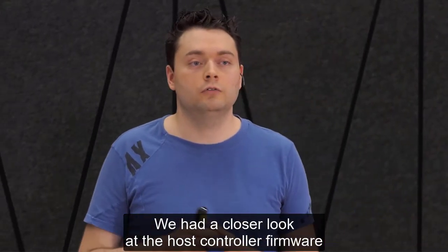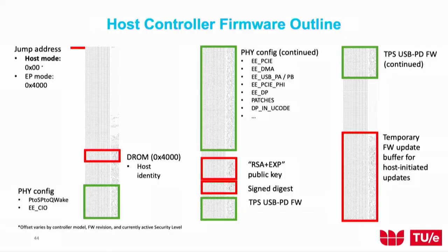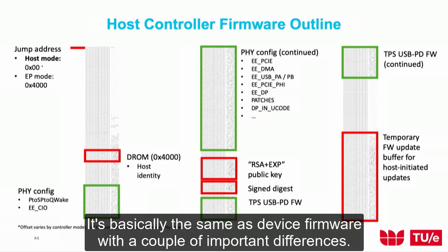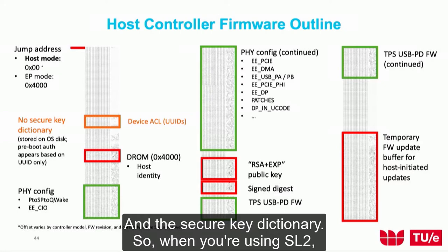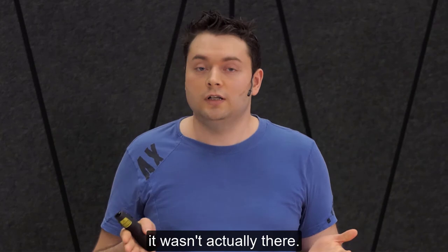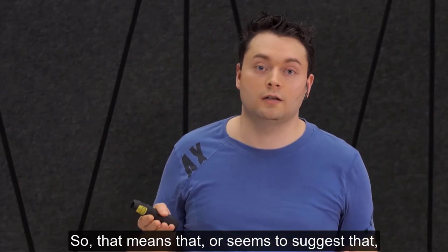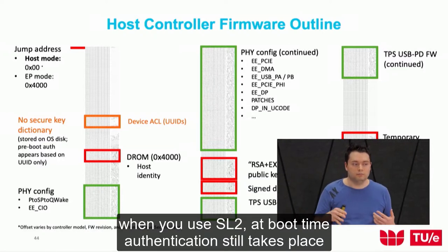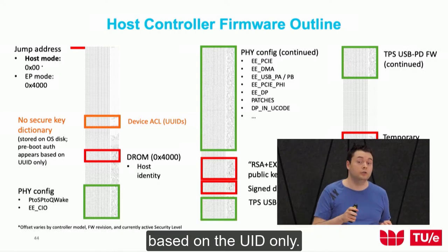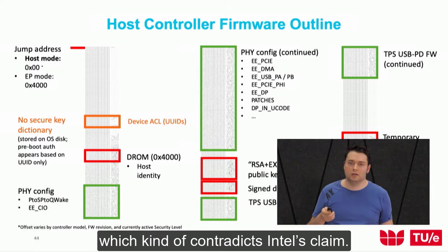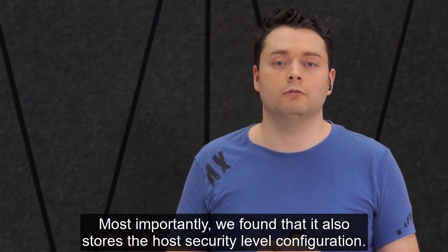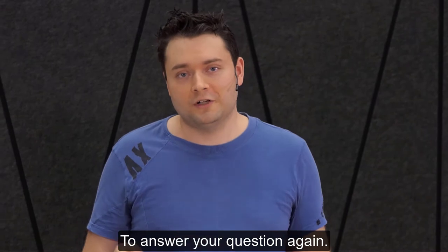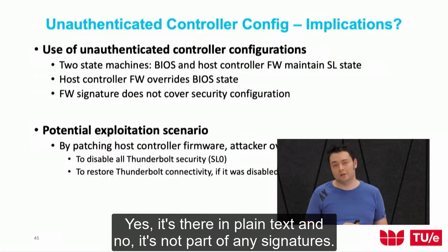The host controller firmware is basically the same as device firmware but with important differences. First, the list of allowed devices is just there in plain text. The secure key dictionary for SL2 wasn't actually there, which seems to suggest that at boot time, even when using SL2, authentication still takes place based on UUID only — contradicting Intel's claim. Most importantly, we found that the firmware also stores the host security level configuration in plain text, not part of any signatures.